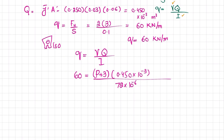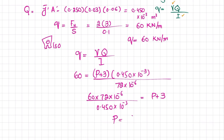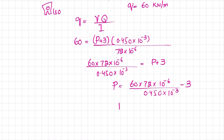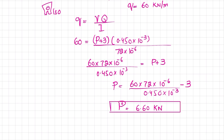Solving: 60 times 72 times 10 to the minus 6 divided by 0.450 times 10 to the minus 3 equals P plus 3. Calculating the left side gives 9.60 kilonewton, so P equals 9.60 minus 3, and P equals 6.60 kilonewton.